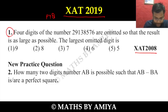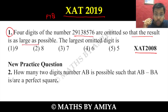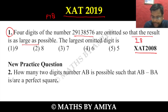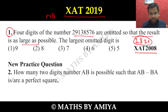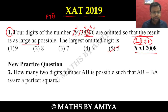Question number one is taken from JAT 2008: four digits are omitted so that the result is as large as possible. If you want the largest number, start from 9 — the largest digit — followed by 8, 7, 6. So I want 9, 8, 7, 6, which means I have to omit 2, 1, 3, and 5. The largest digit omitted is 5, so the answer is 5.